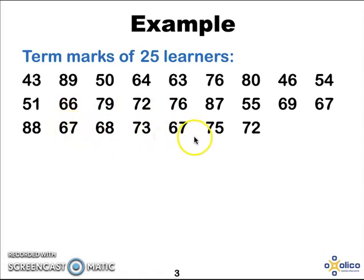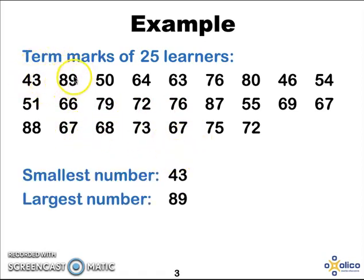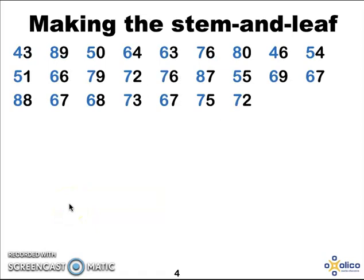Looking through the numbers, you'll see the smallest number is 43 and the largest number is actually 89. So now that we know the smallest number and the largest number, we know where to start our stem and leaf diagram.